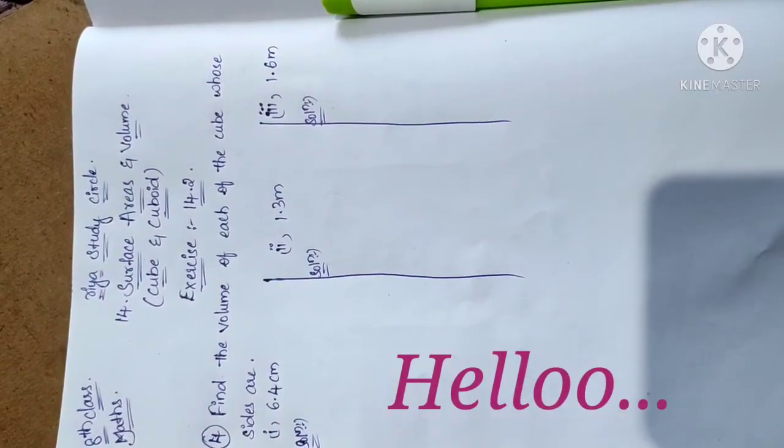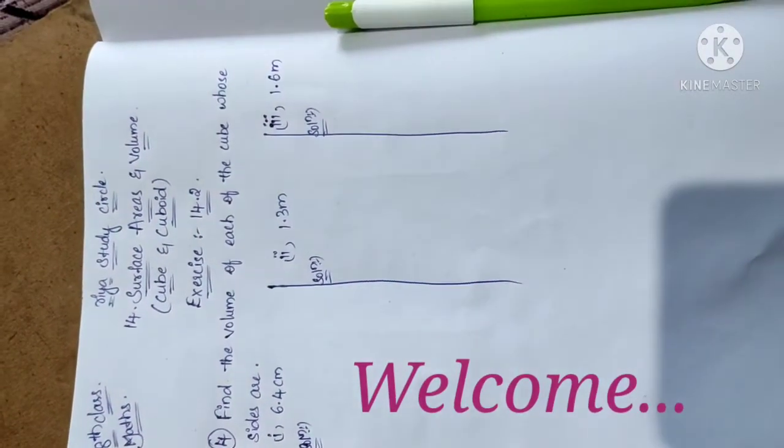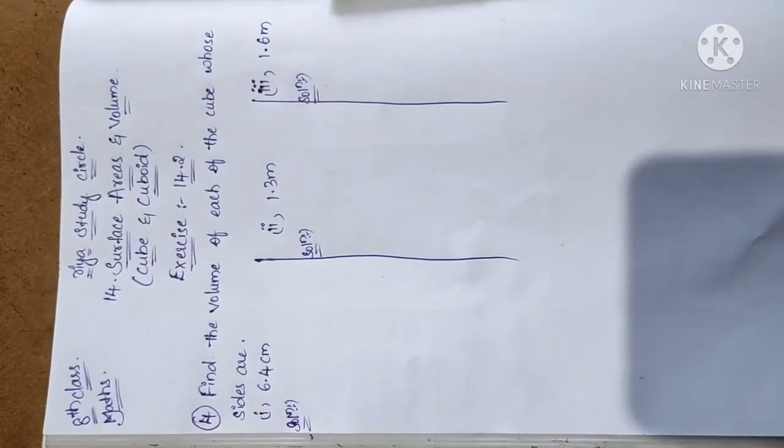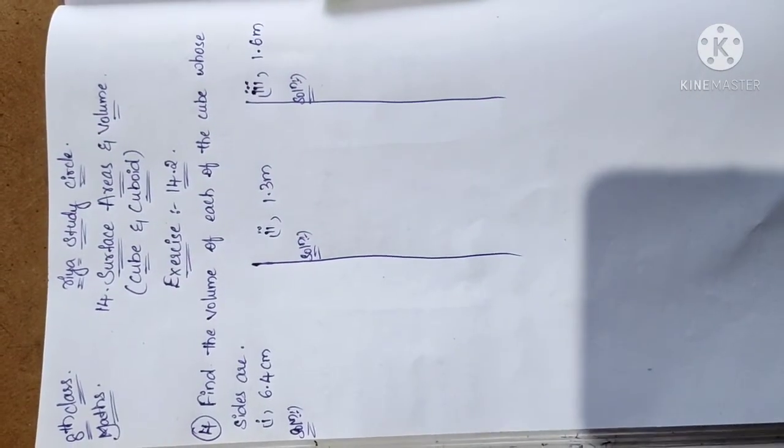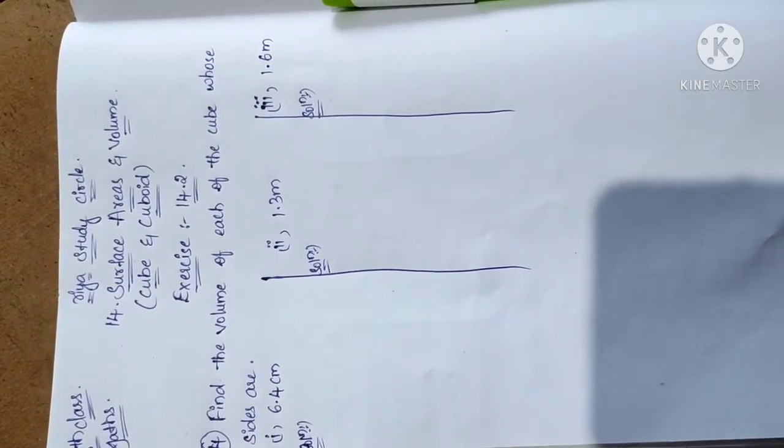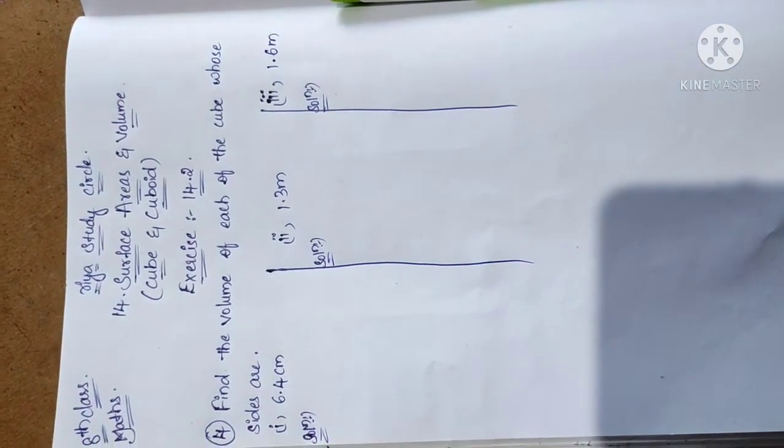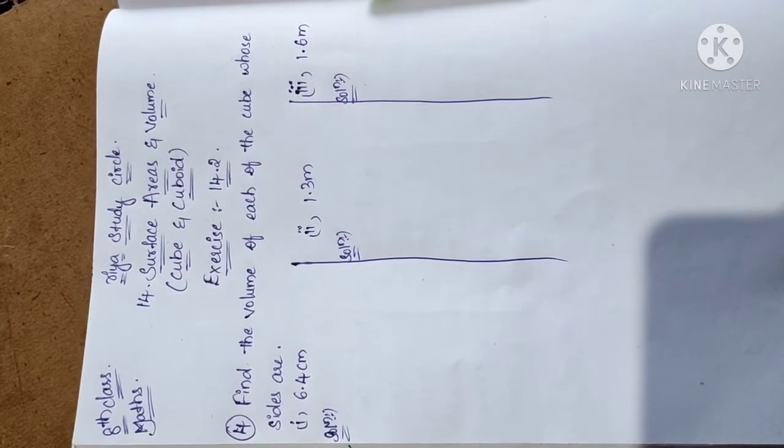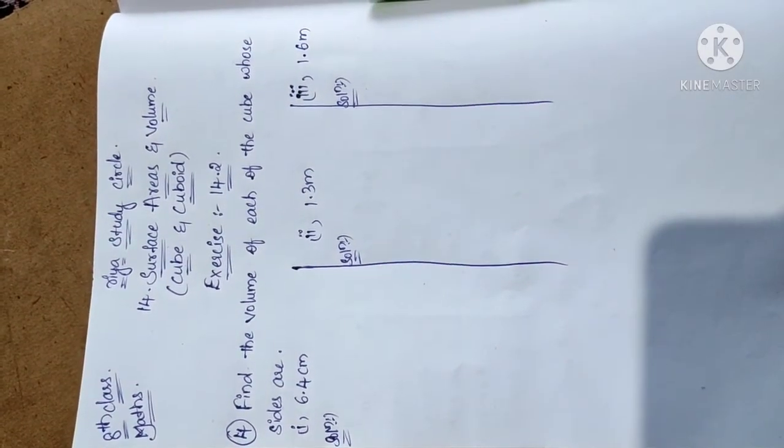Hello everyone, welcome to my channel Real Study Circle. This is a requested video from my viewers. Today I am going to explain 8th class Maths, Chapter 14: Surface Areas and Volume (Cube and Cuboid), Exercise 14.2, Problem 4. Find the volume of each cube whose sides are given.